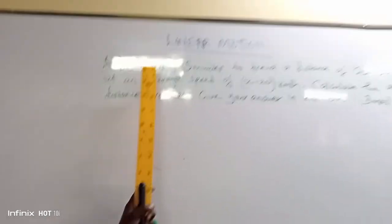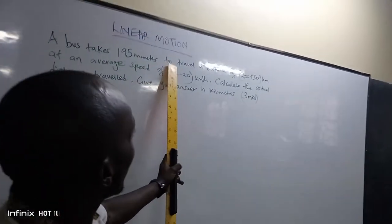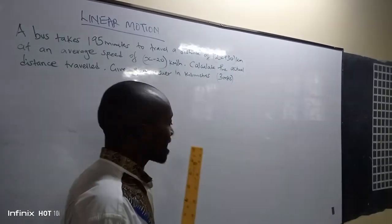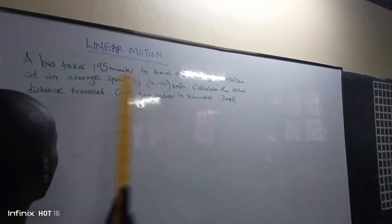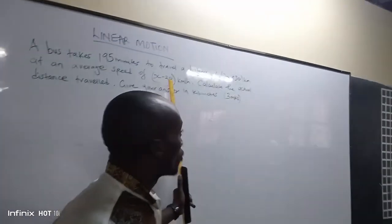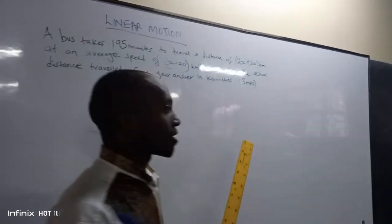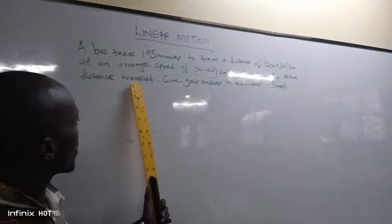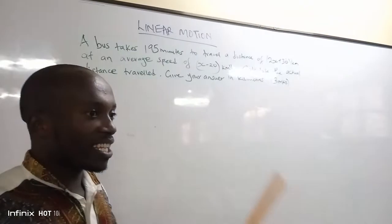A bus takes 195 minutes to travel a distance of x plus 30 km at an average speed of x minus 20 km per hour. You are asked to calculate the actual distance traveled. Give your answer in km.